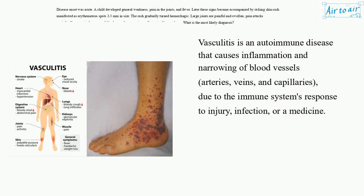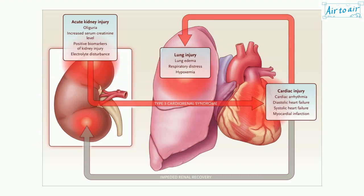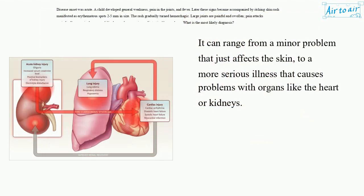Vasculitis is an autoimmune disease that causes inflammation and narrowing of blood vessels, arteries, veins, and capillaries, due to the immune system's response to injury, infection, or a medicine. It can range from a minor problem that just affects the skin, to a more serious illness that causes problems with organs like the heart or kidneys.